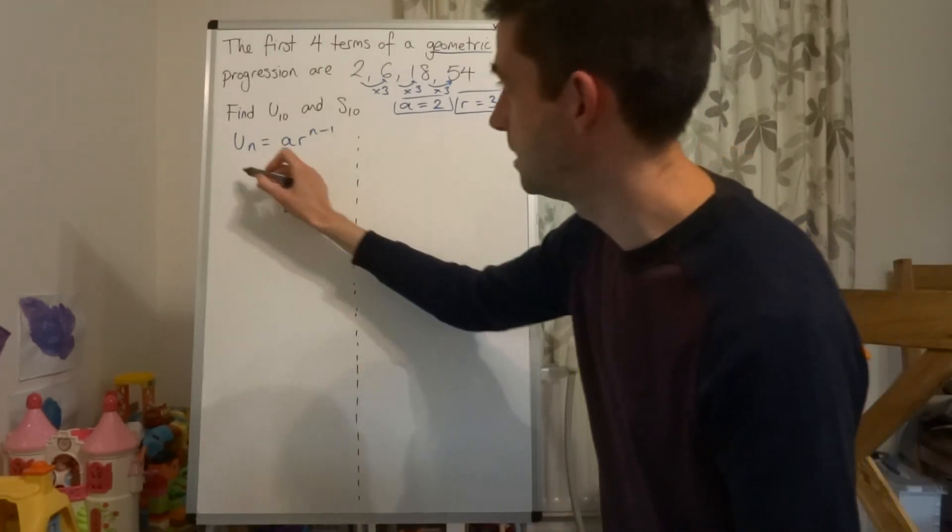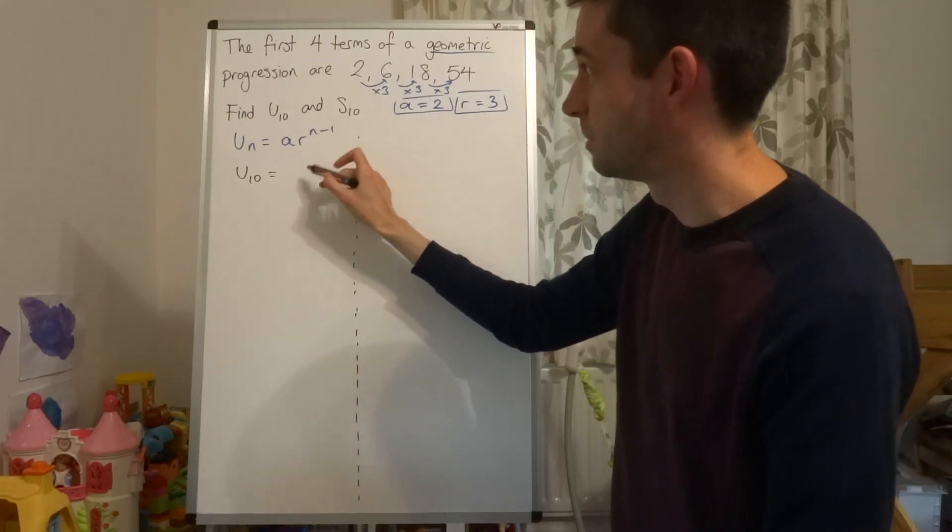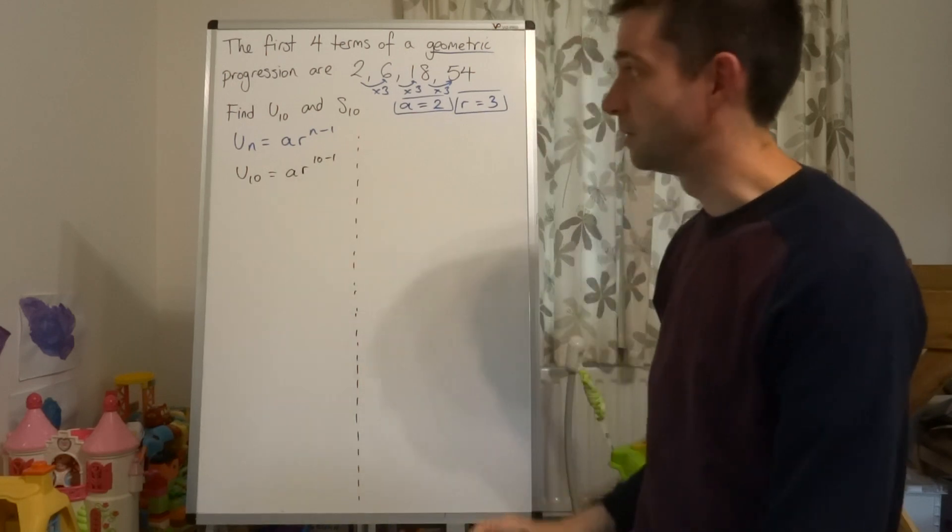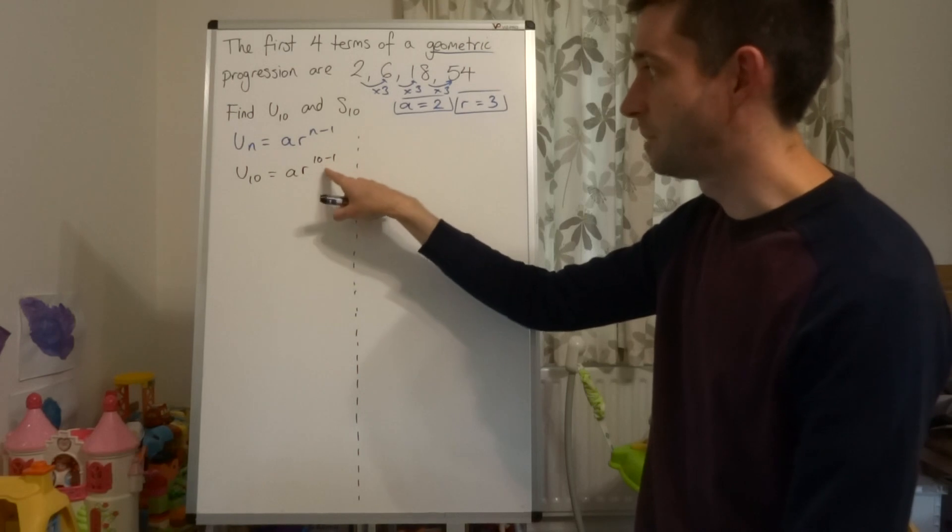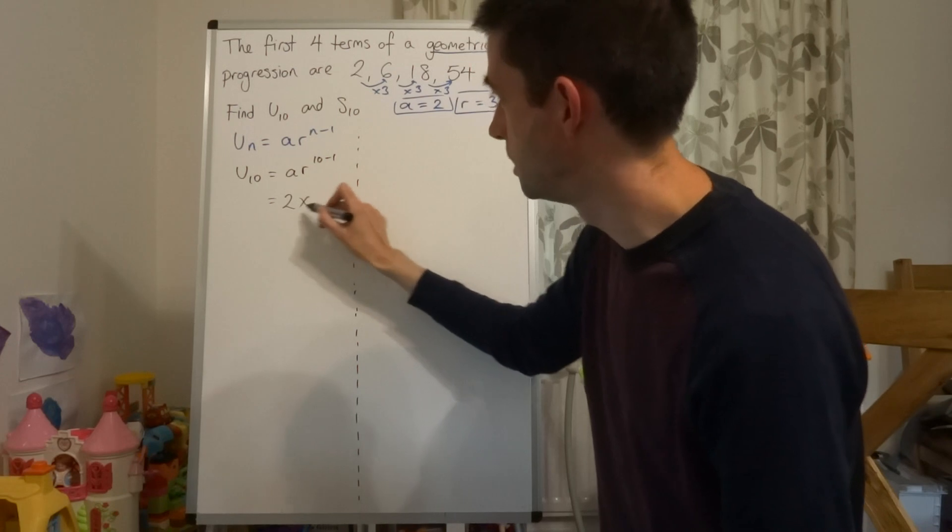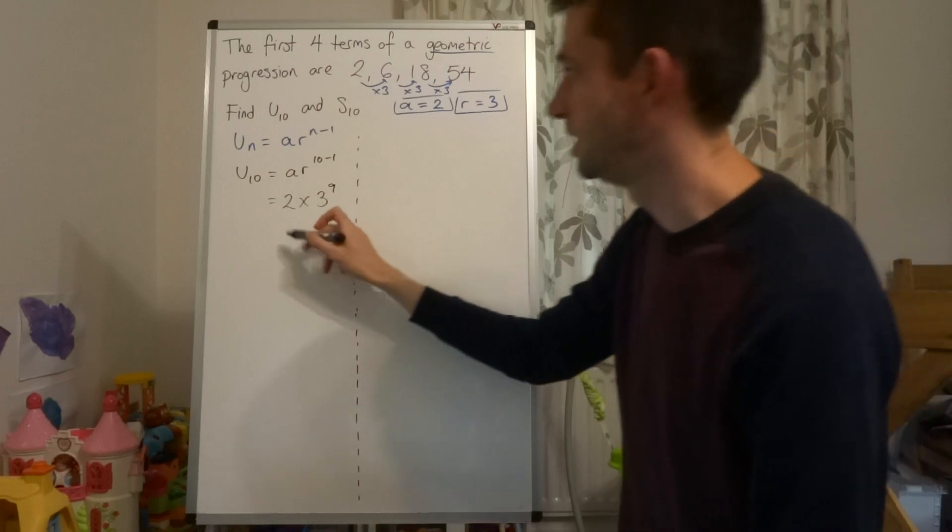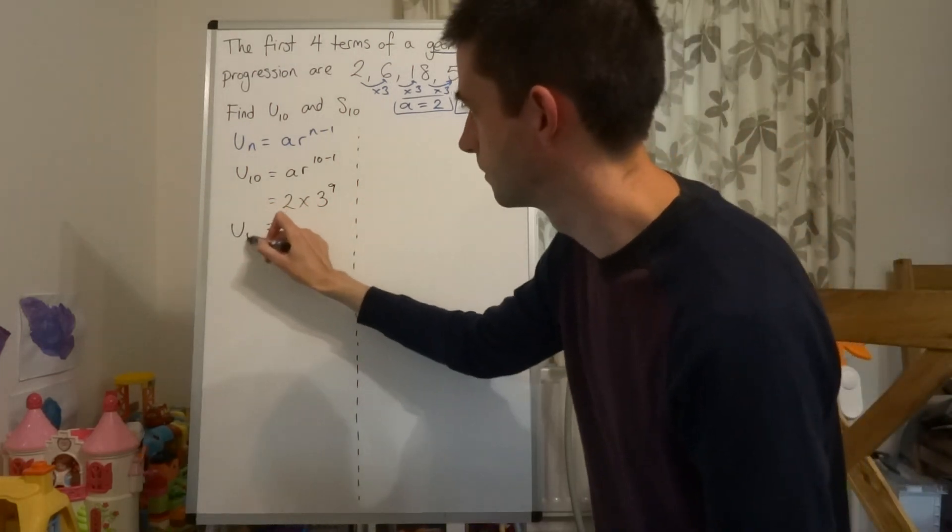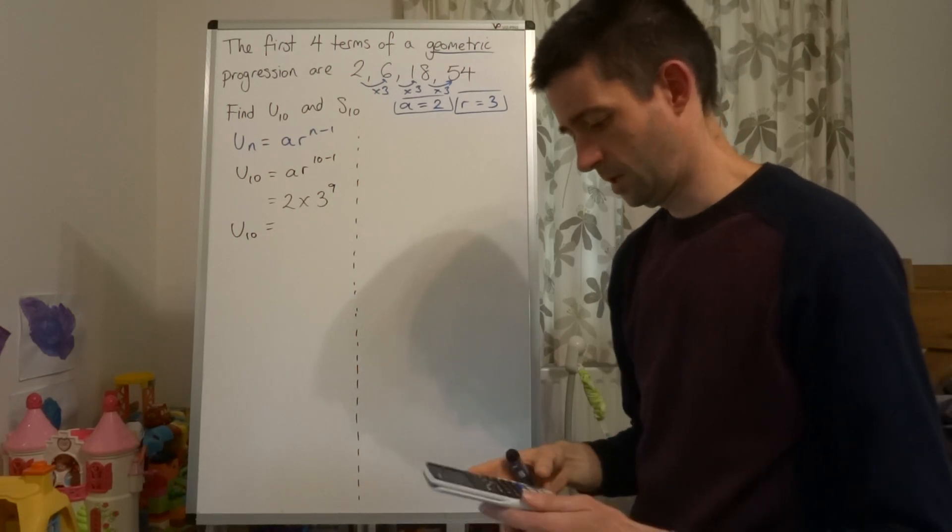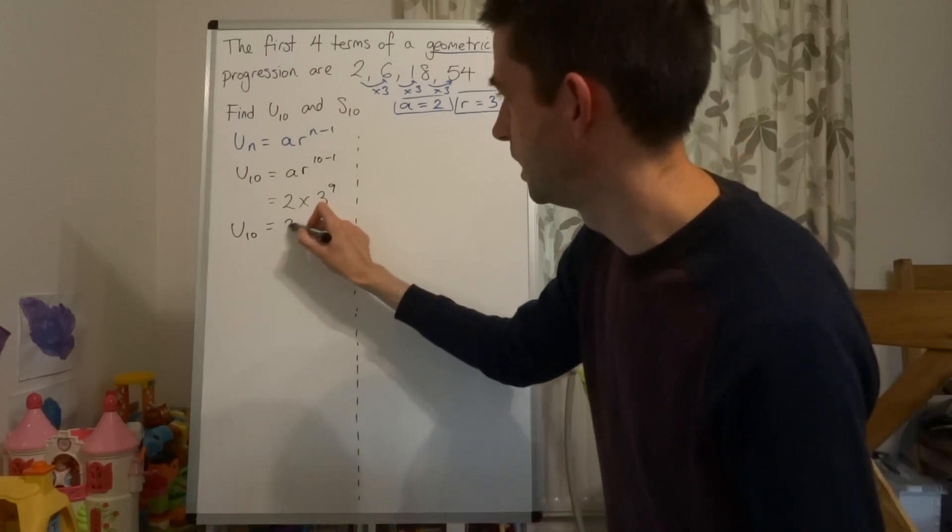So we're finding the tenth term here, which is going to be AR to the power of 9. We'll take the time to write that up: AR to the power of 10 minus 1, so AR to the power of 9. But I know that A is 2 and R is 3. So 2 times 3 to the power of 9, which is 39,366.